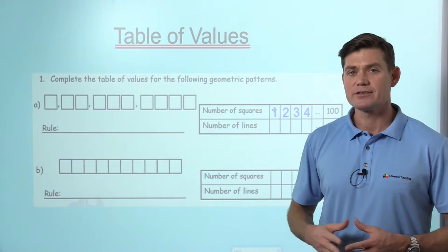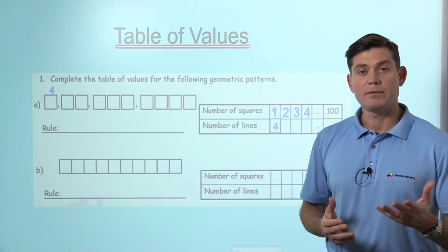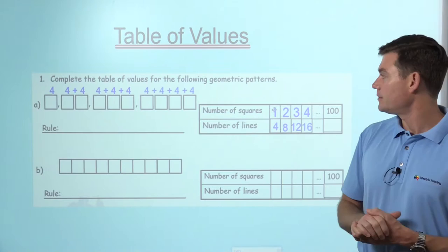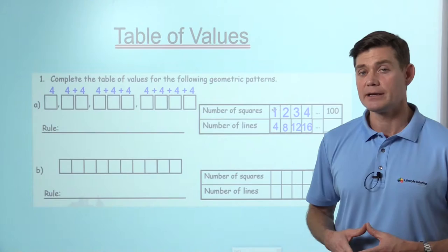Well, in the first one, we've got a square, so that's going to be four lines. In the second one, we've got two squares, so it would be four plus four is eight. In the third one, four plus four plus four. And in the last one, four plus four plus four plus four. That is the pattern that's happening.